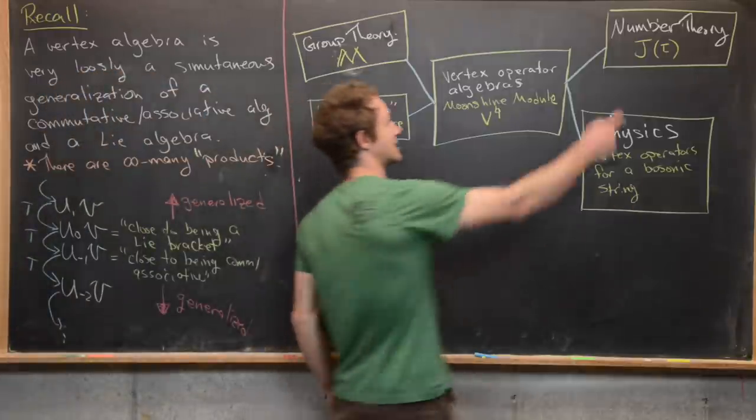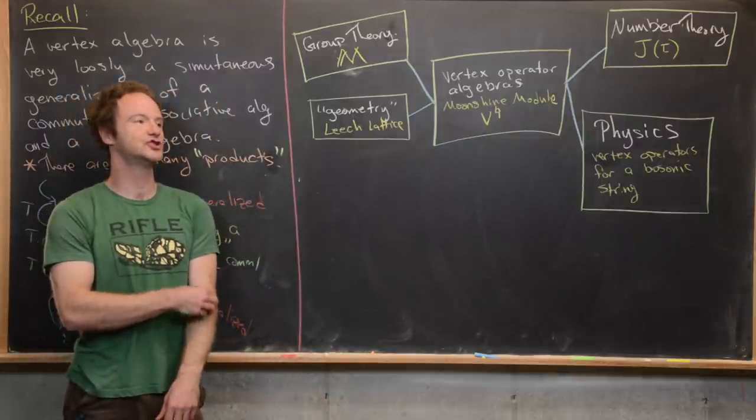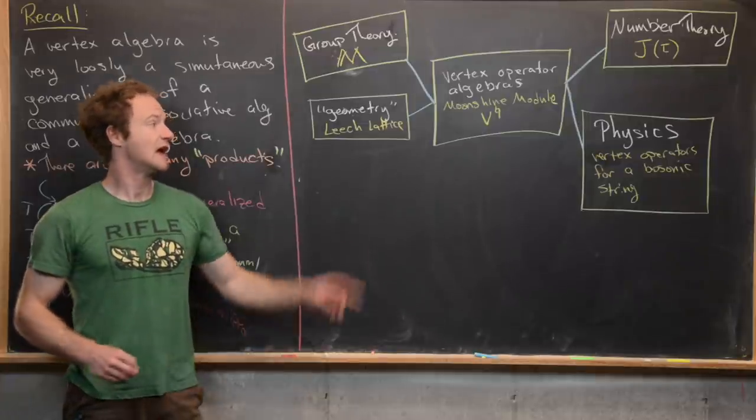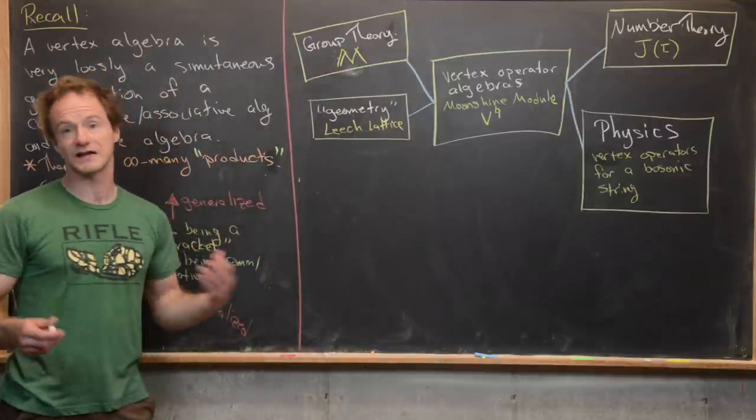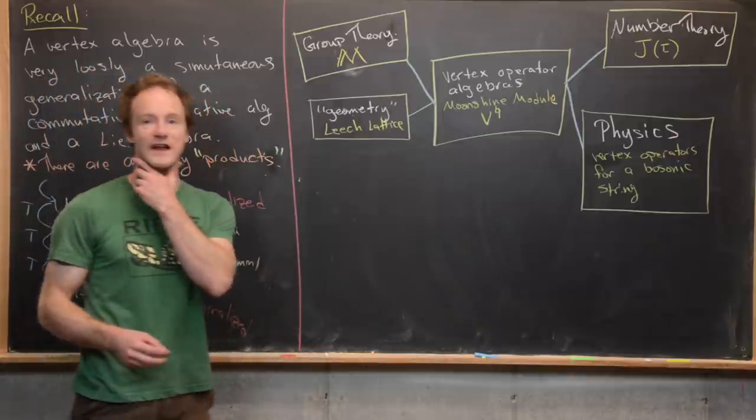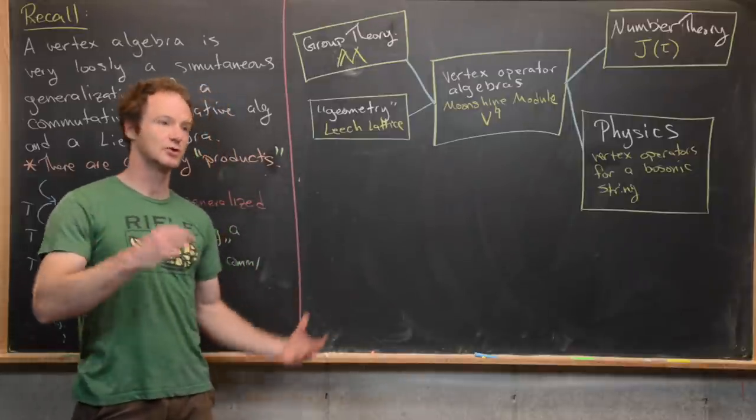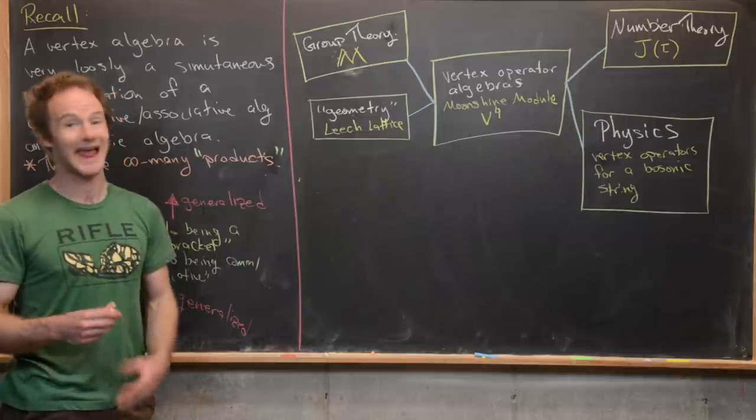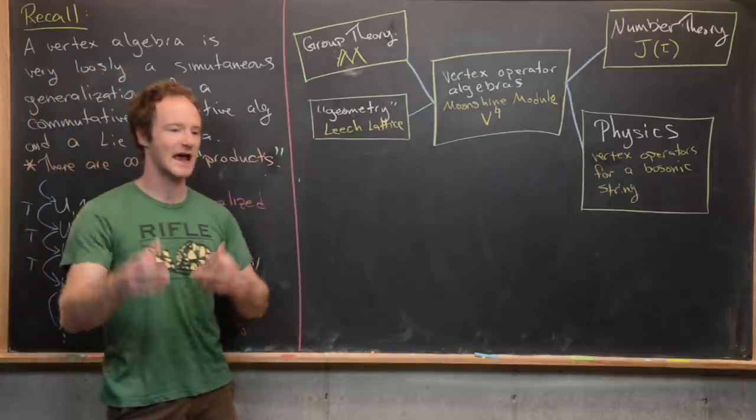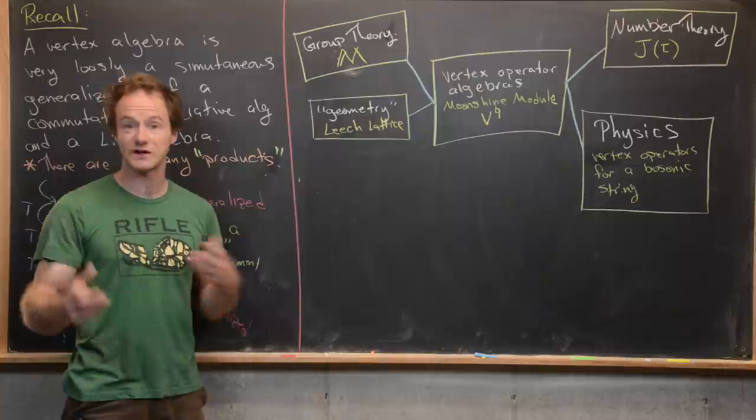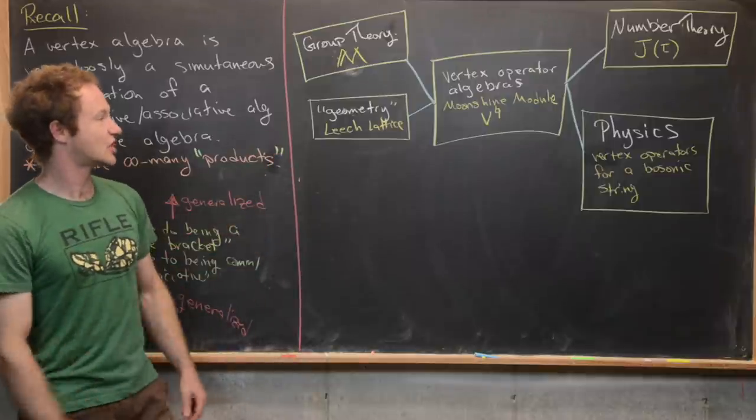Next, there's this analytic number theory object, the analytic J function. So that's a modular form. Remember, modular forms were super important in proving Fermat's last theorem. And then next, there are these things from physics. So vertex operators for a bosonic string. And so that's actually how these things were motivated into definitions in the first place. There were some notions of vertex operators looming around in the string theory literature in the 80s. And Richard Borcherds came along and said, hey, I'm going to take this and make a careful mathematical description of what's going on. And that ended up birthing the subject of vertex operator algebras.